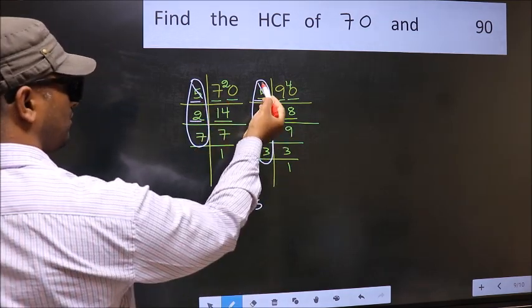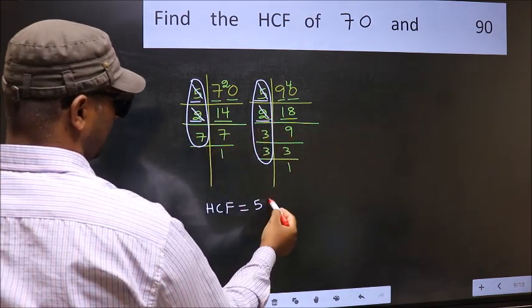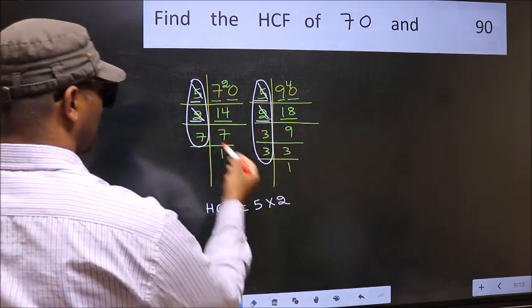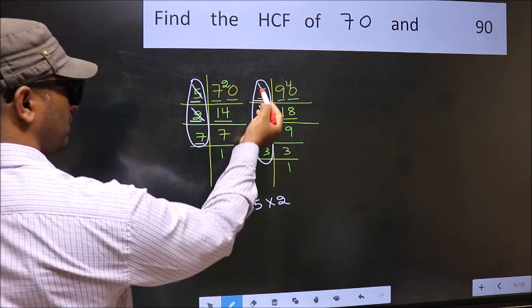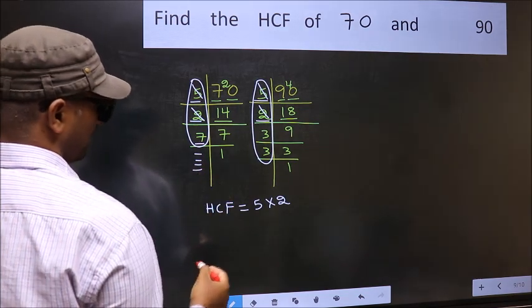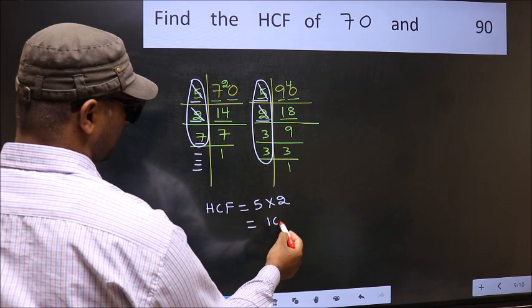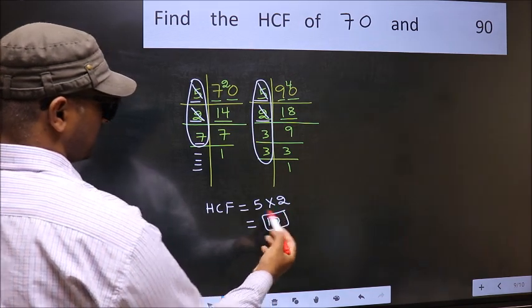Next number 2. Do we have 2 here? Yes. So cut 2 right here. Next number 7. Do we have 7 here? No. No more numbers have been left out. So our HCF is 5 into 2, 10 is our HCF.